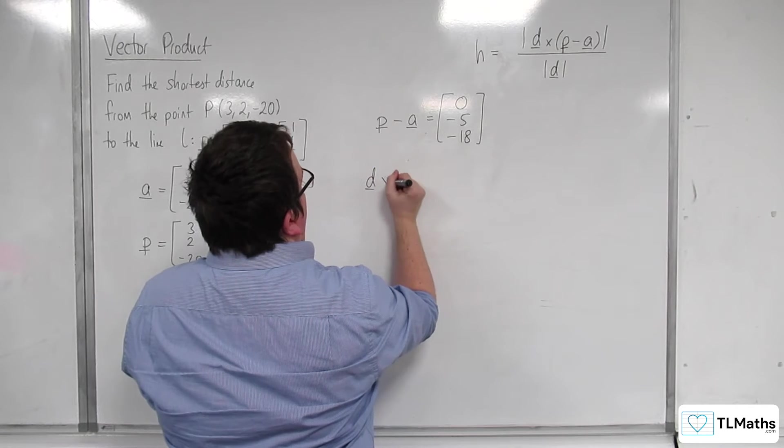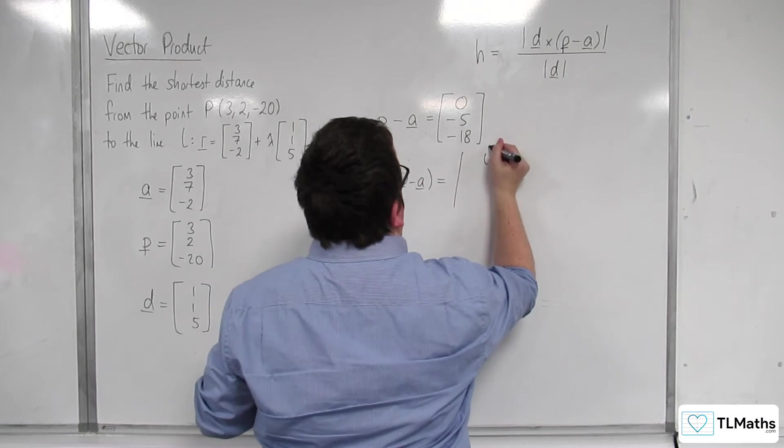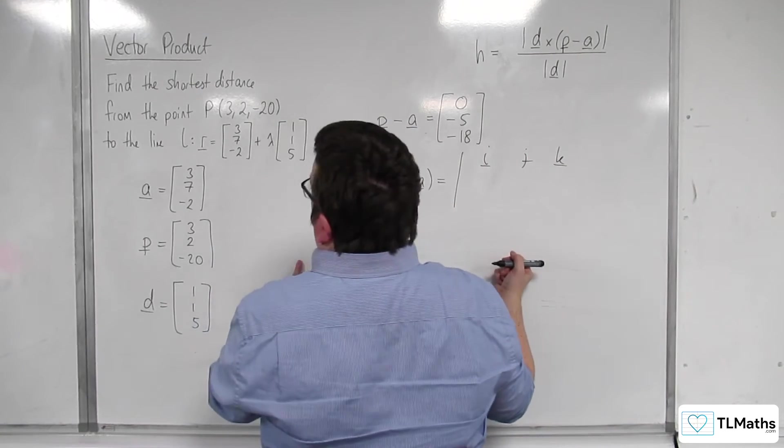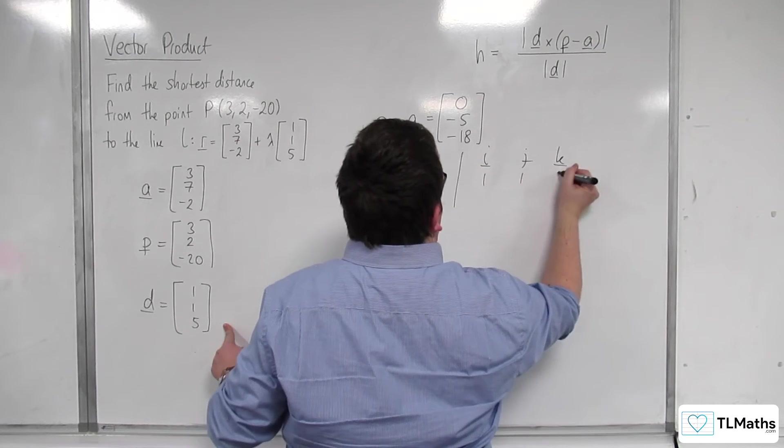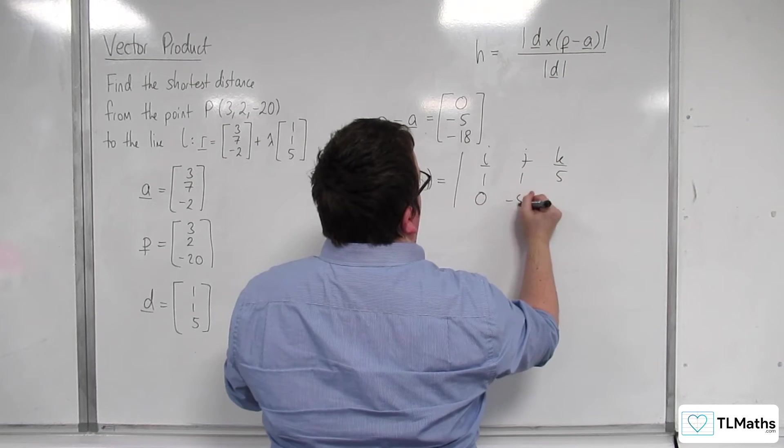Then we've got D cross (P take away A), which is the determinant of the matrix with I, J, K in the first row, D equals (1, 1, 5) in the second row, and (0, -5, -18) in the third row.